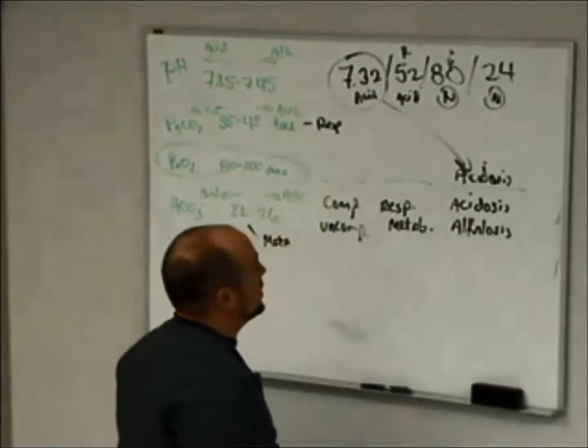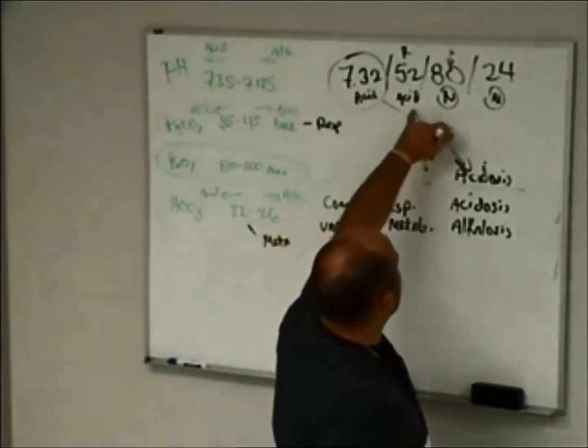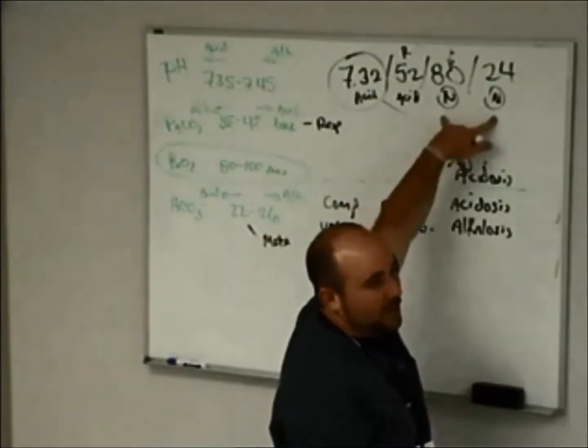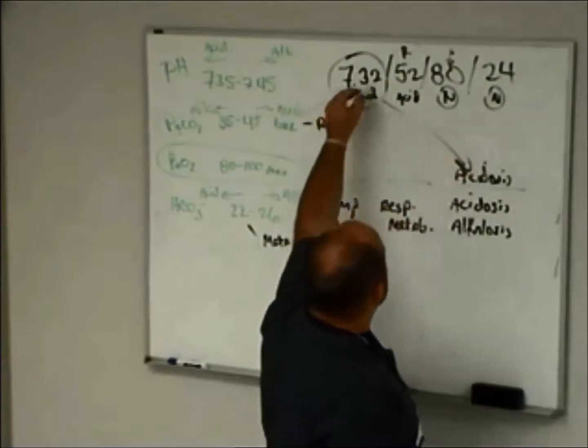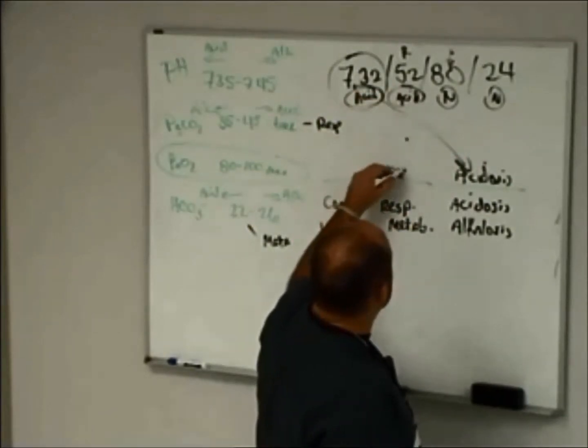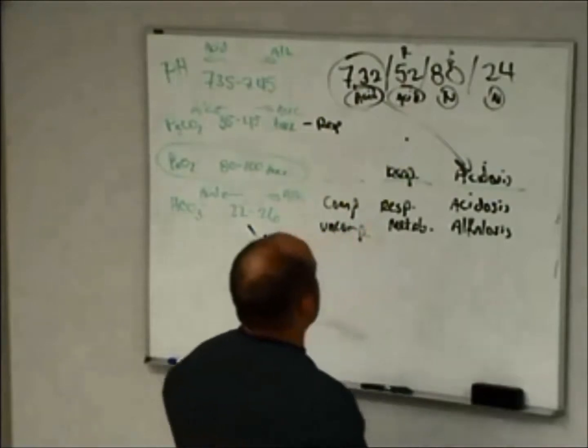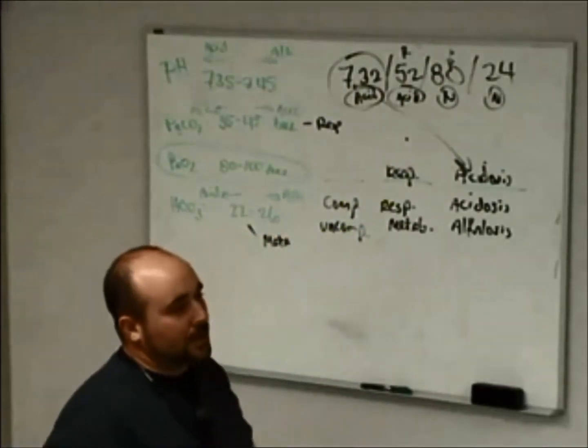So that's acidosis. And what are we going to blame the acidosis on? Well, we have two options. We have respiratory, we have metabolic. Well, in this case, this matches this, so it's going to be respiratory. And at this, you're going to say, okay, are we compensated or not?